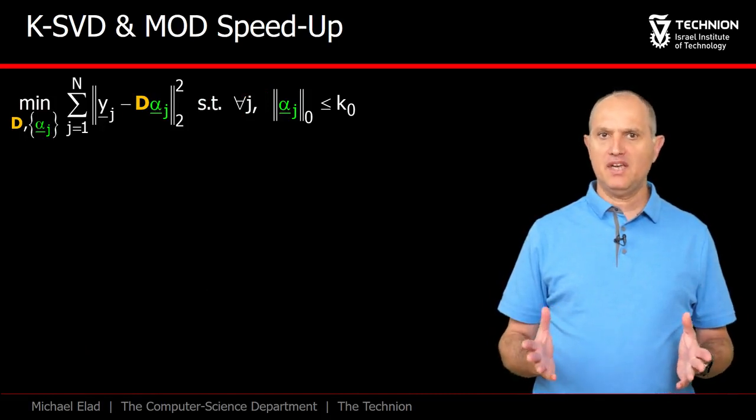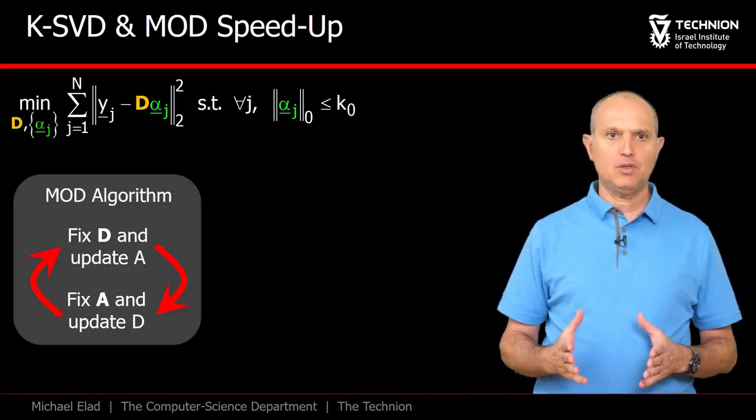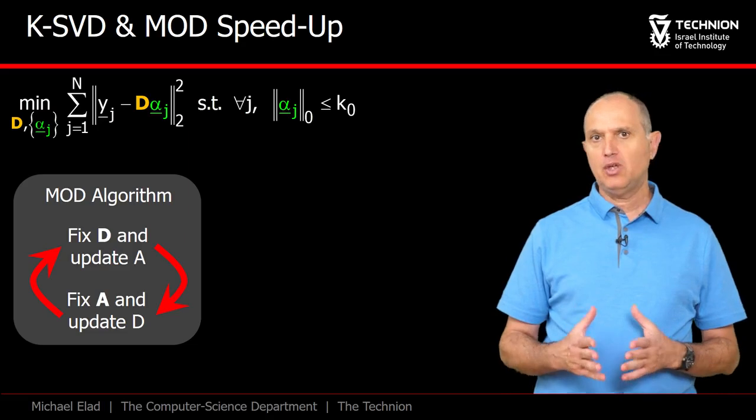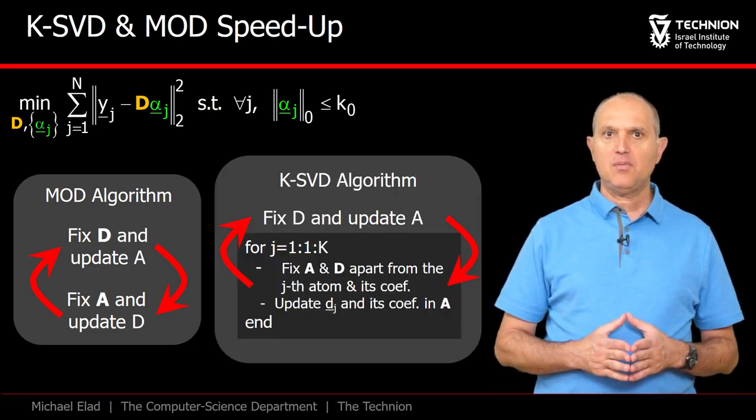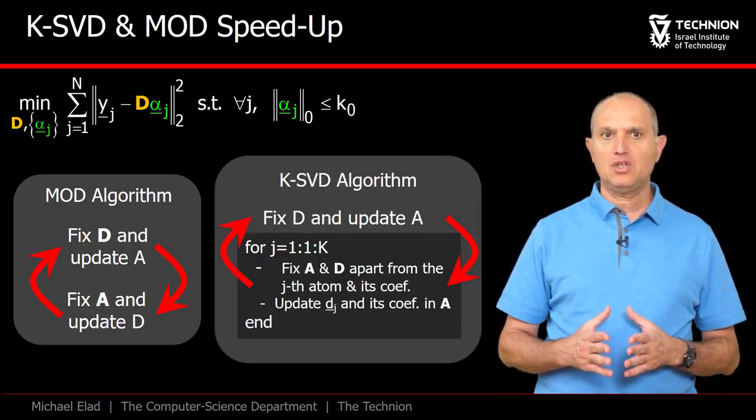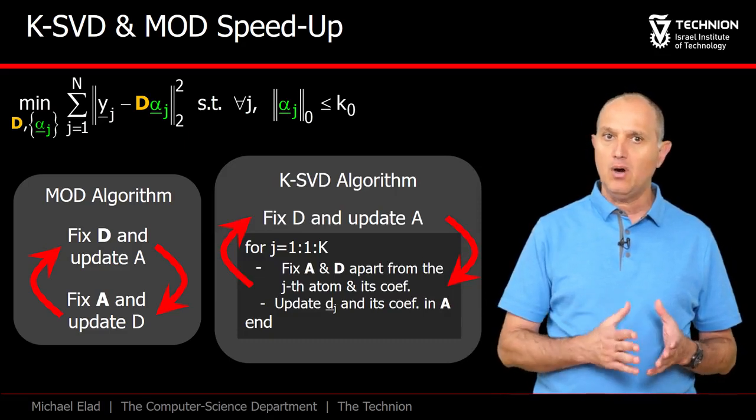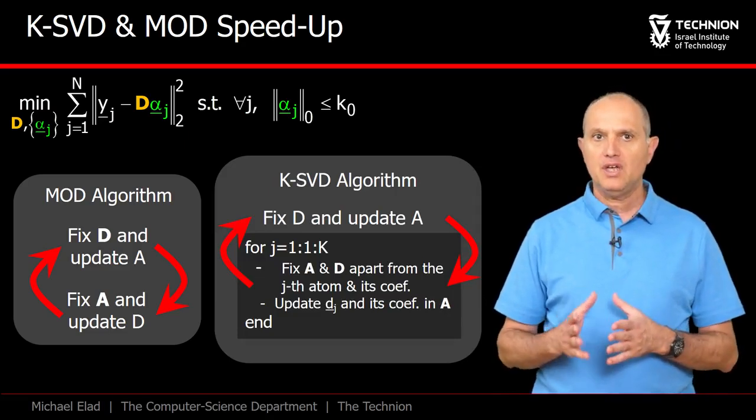We have just met the MOD and the KSVD. The MOD iterates between an update of A to an update of D. And the KSVD does something slightly more complex in the dictionary update stage. It modifies the atoms in D one by one when also touching A.